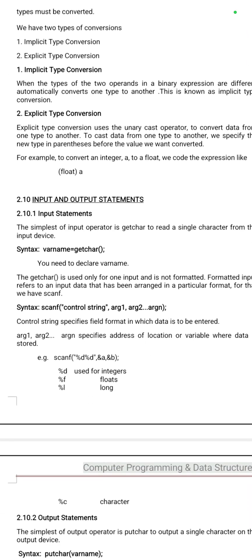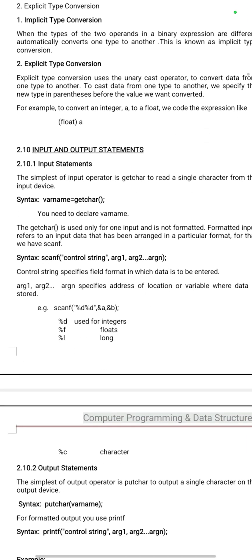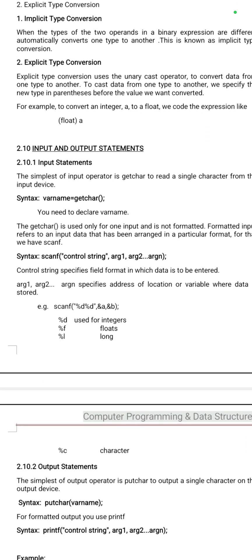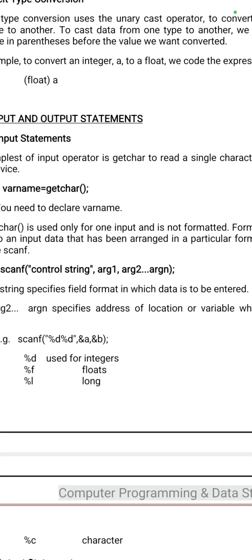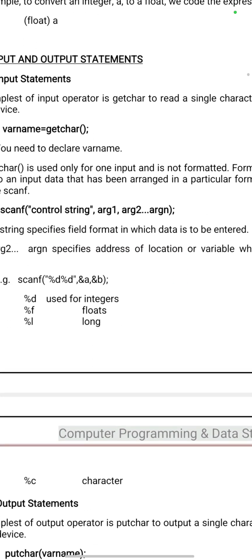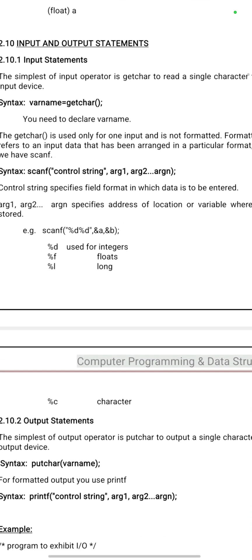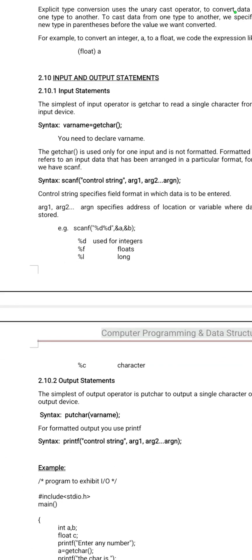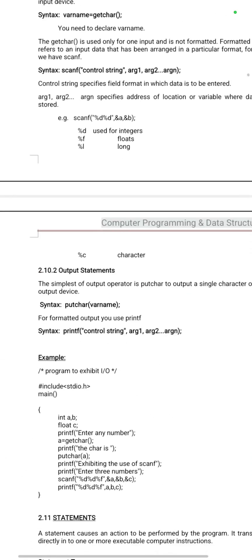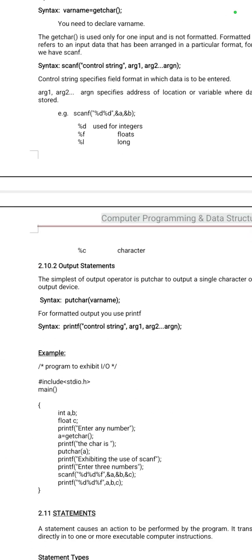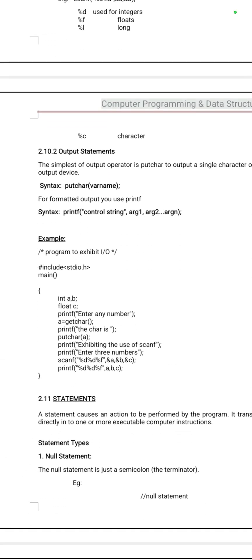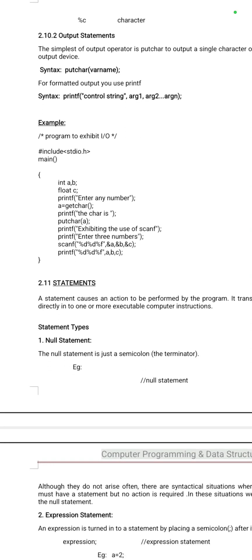What are the input and output statements? The input statement is scanf and the output statement is printf. Also, getchar and getc are called input functions. These are the notes of input and output statements with examples.